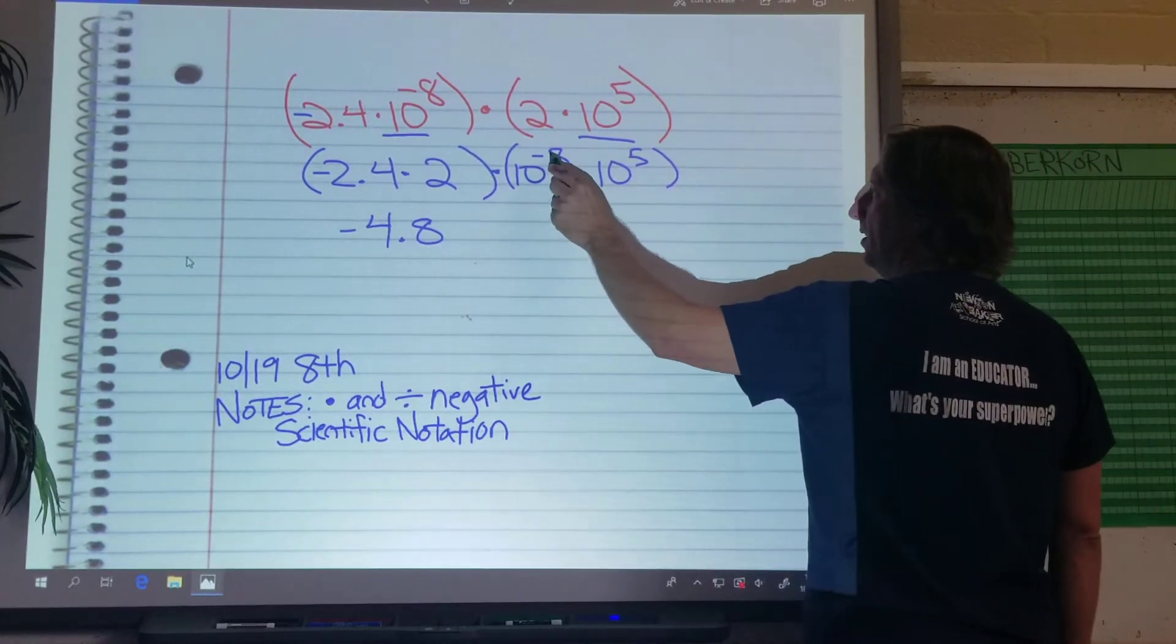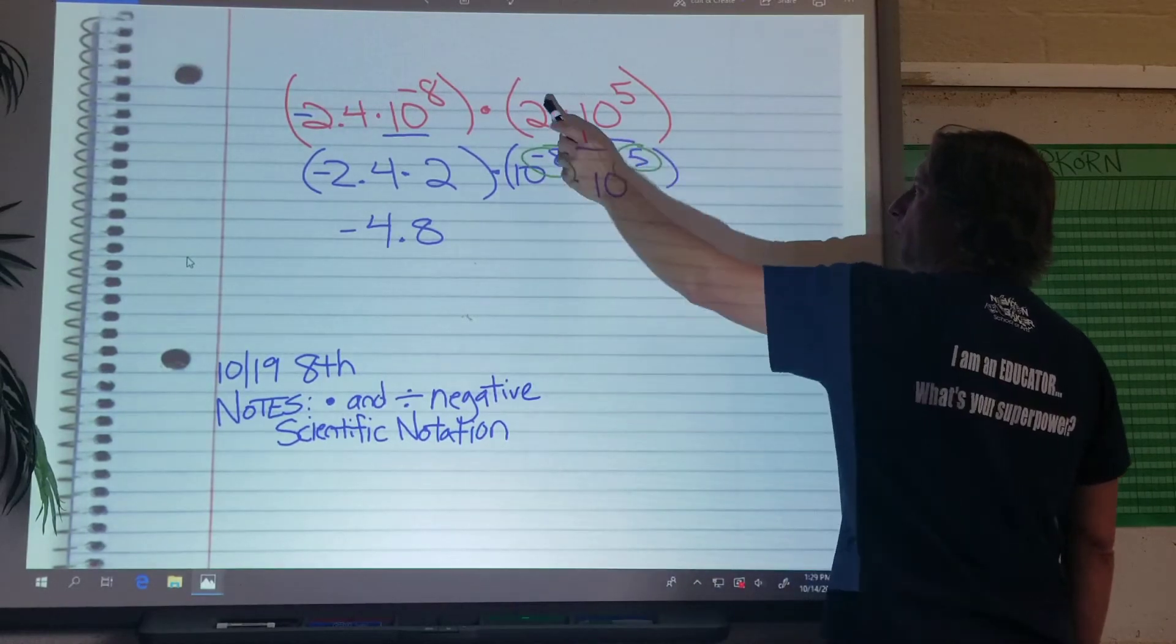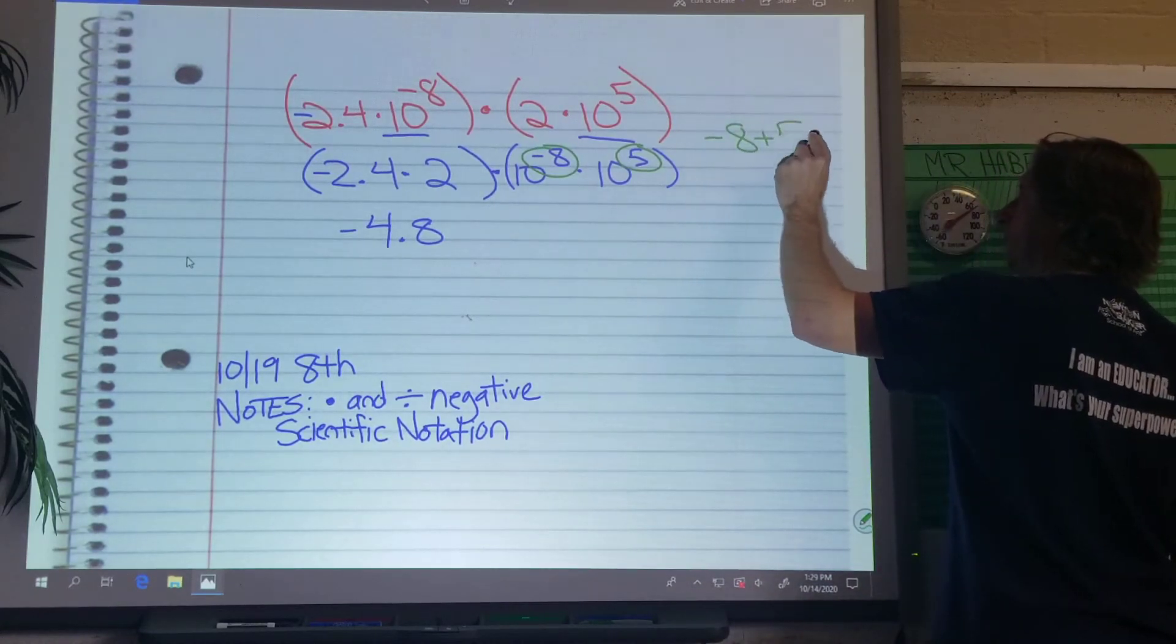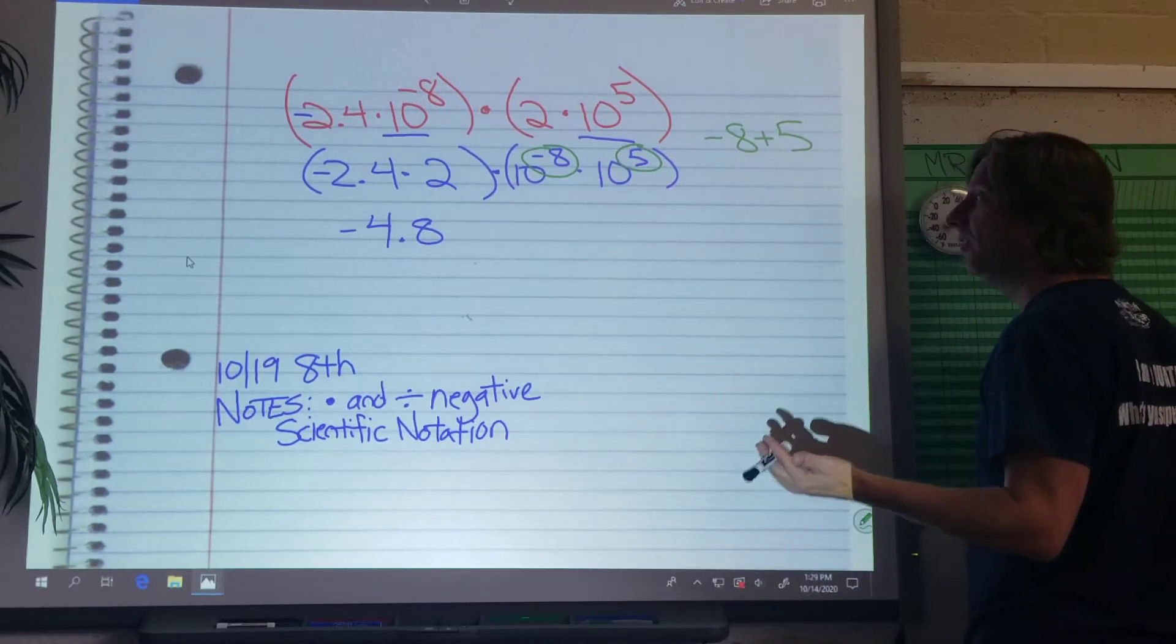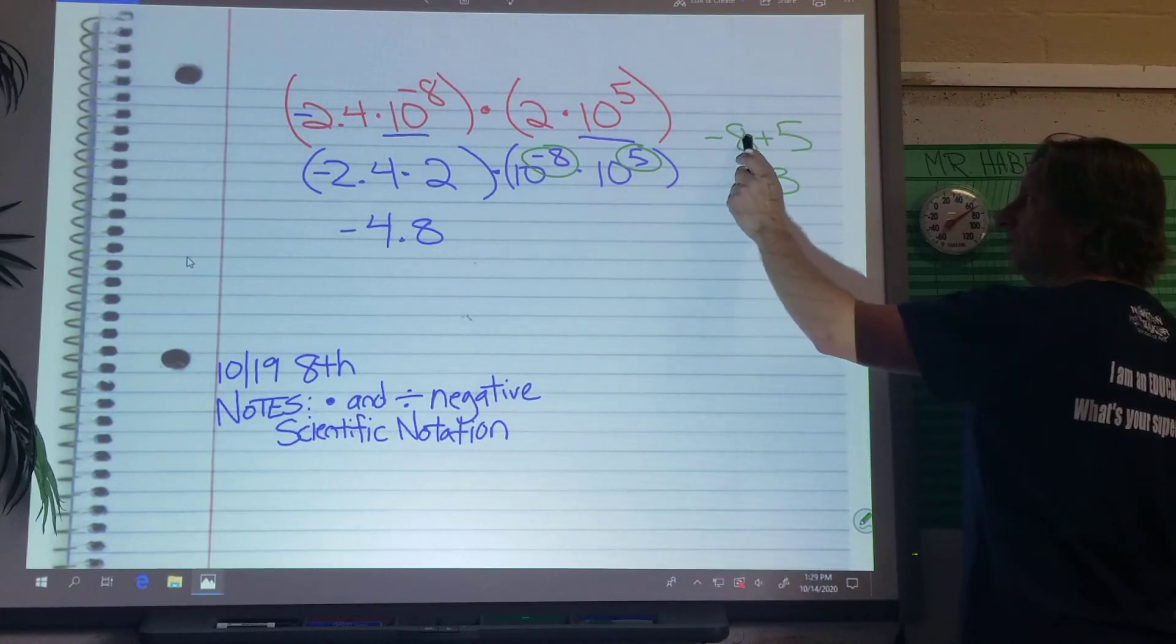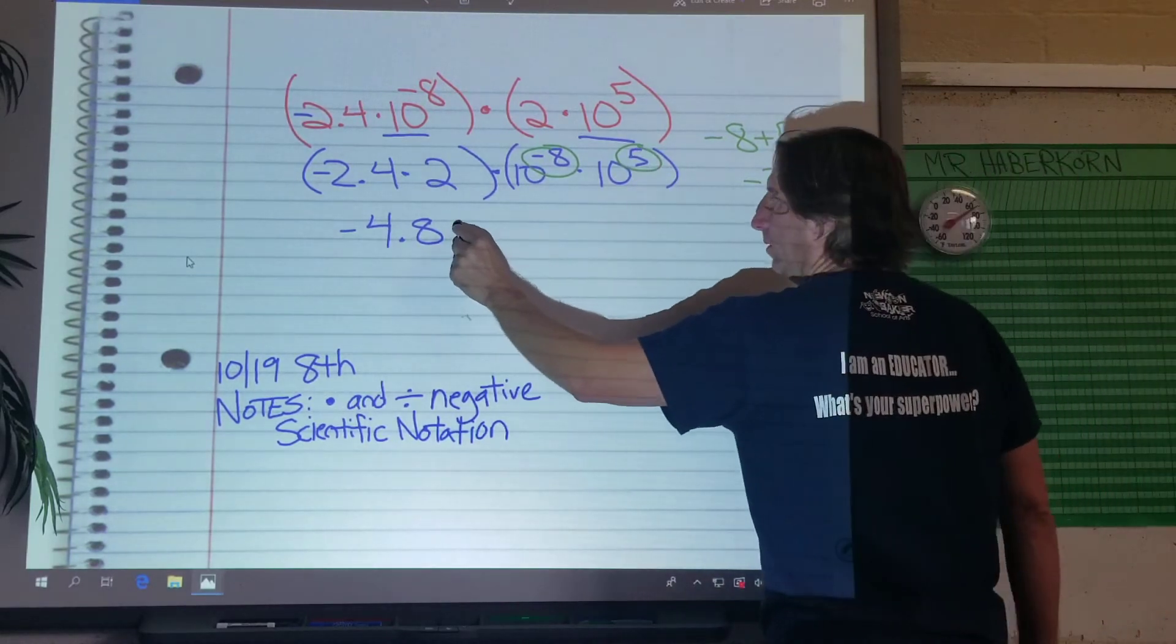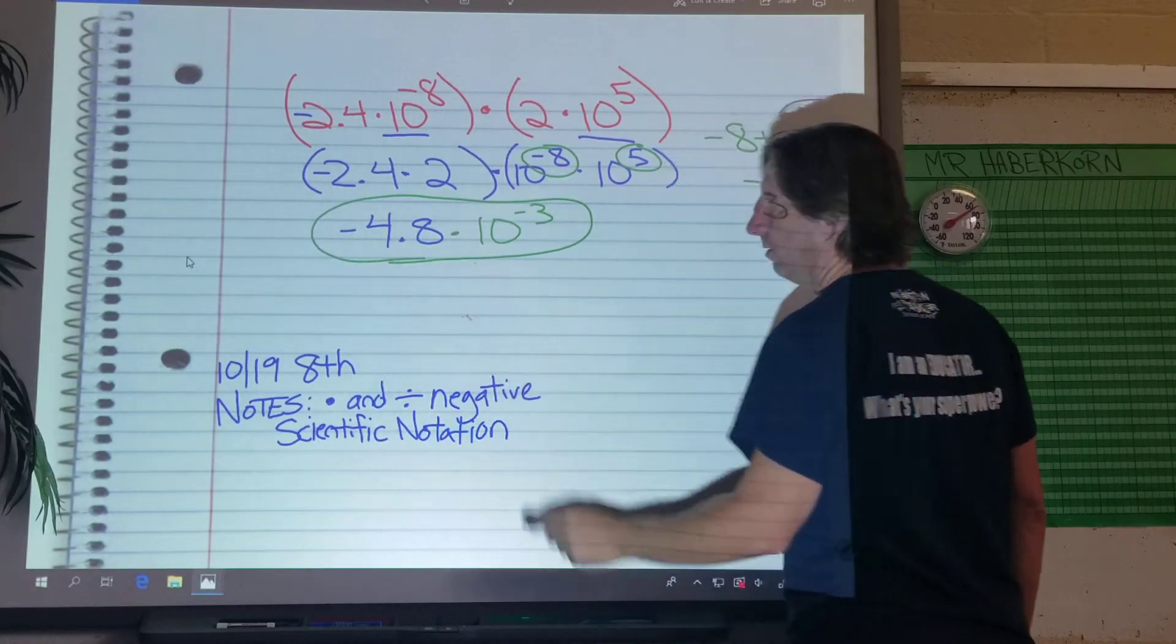All right, then let's cut our exponents. I have a negative 8 and a 5. And remember, we want to add those exponents, right? So here's what we have to think. Negative 8 plus 5. Same signs are different. Remember that from last year? Different signs we subtract. 8 minus 5 is 3. And then to get the sign, the 8 is stronger, so we use that sign, right? So it's 10 to the negative 3 times negative 4.8. And is that in scientific notation? It sure is.